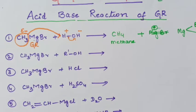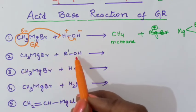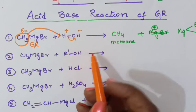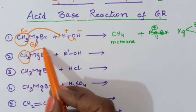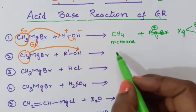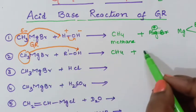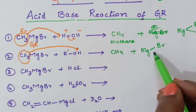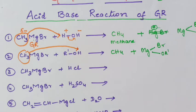Now we will see the second example. Again, this is methyl magnesium bromide as the Grignard reagent, and it is reacting with alcohol. In alcohol, the hydrogen is acidic hydrogen — it will have a partial positive charge. Therefore, the methyl group will attack this H plus ion. As a result, you get methane plus the second product: MgBr and R'O minus, which can be written as MgBr(OR').